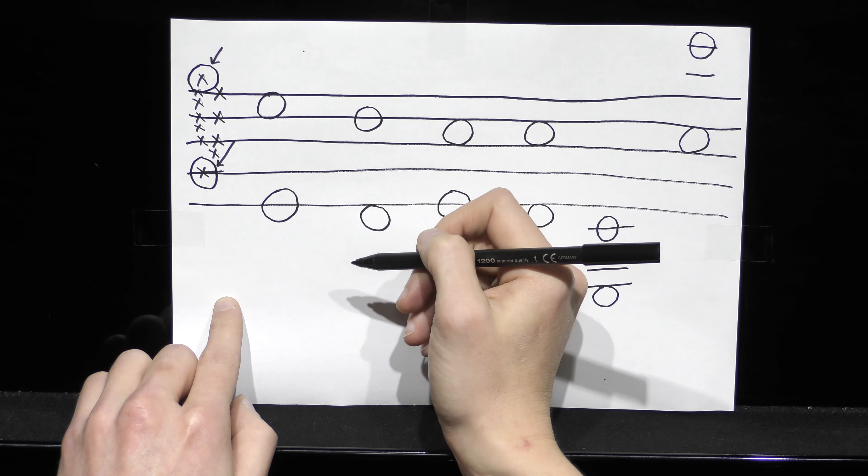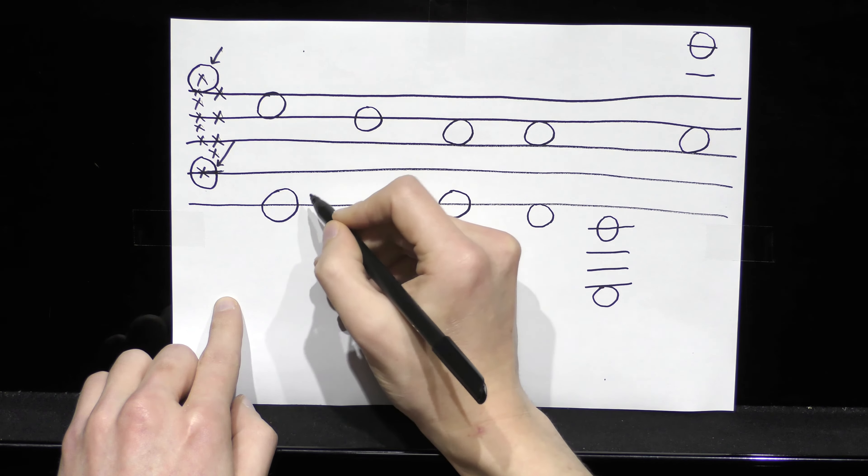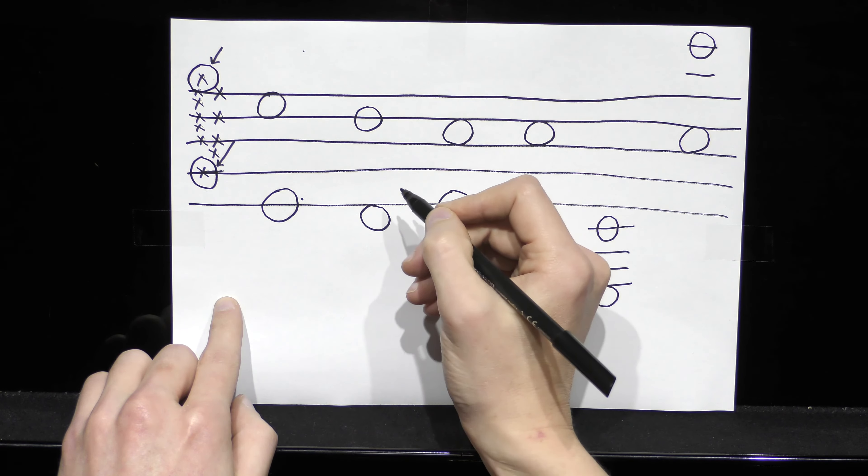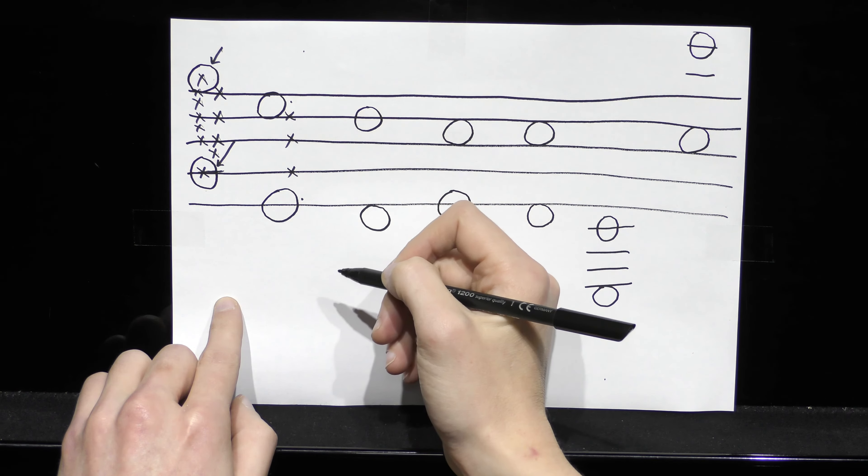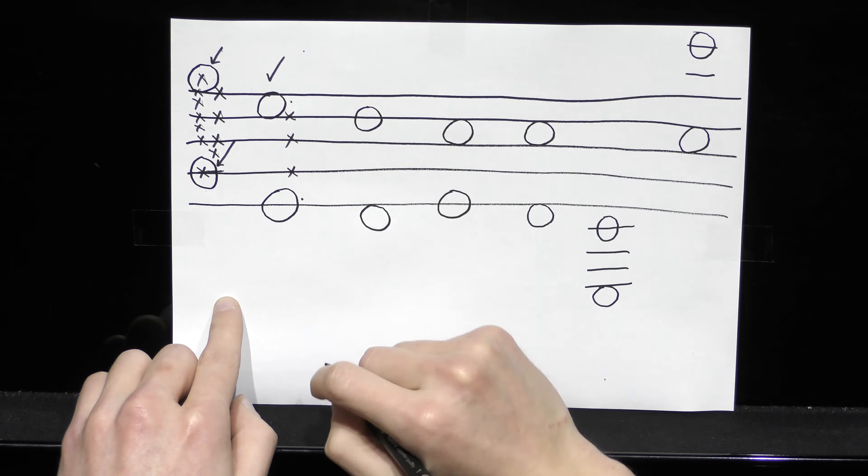So let's see if this is an octave. I have a note on a line, and I have a note on a space, and I have one, two, three lines between. So that must be an octave.